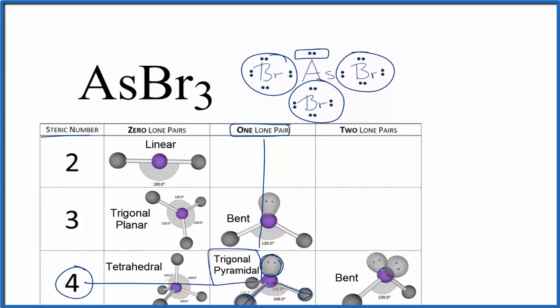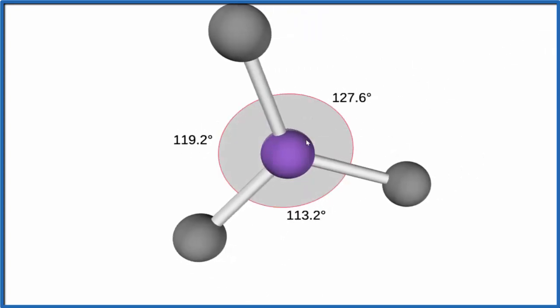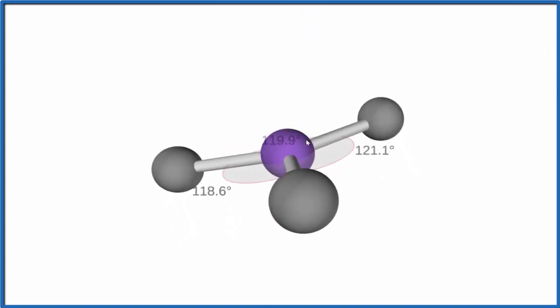Let's take a look at this in three dimensions. So the central atom here, the purple, that's the arsenic, and we're going to add three bromine atoms. One, two, three, and you see they spread out to be as far away as they can from each other.